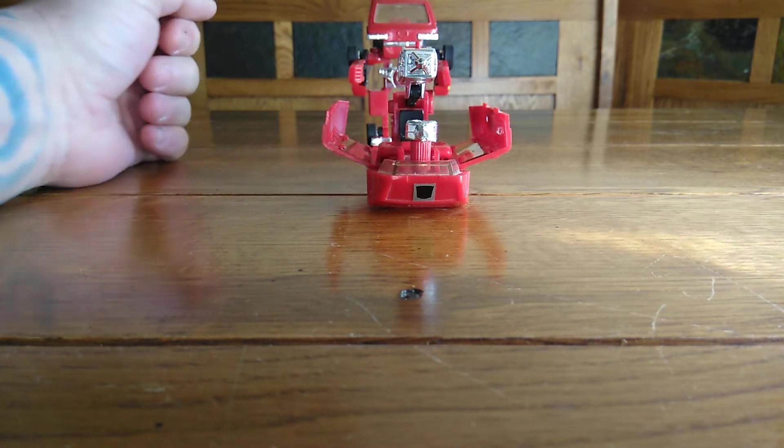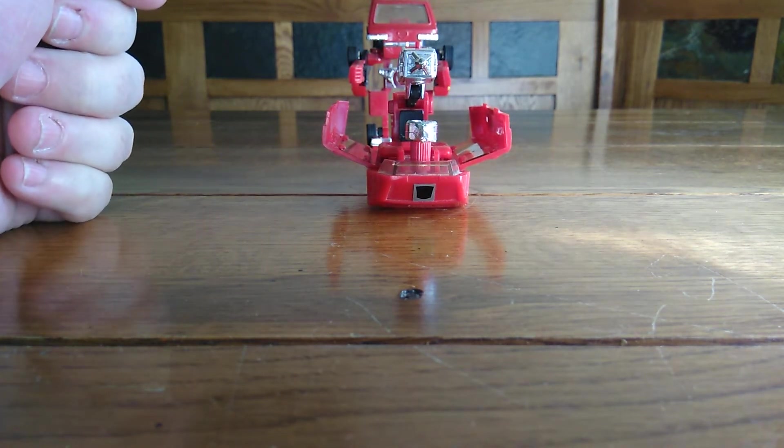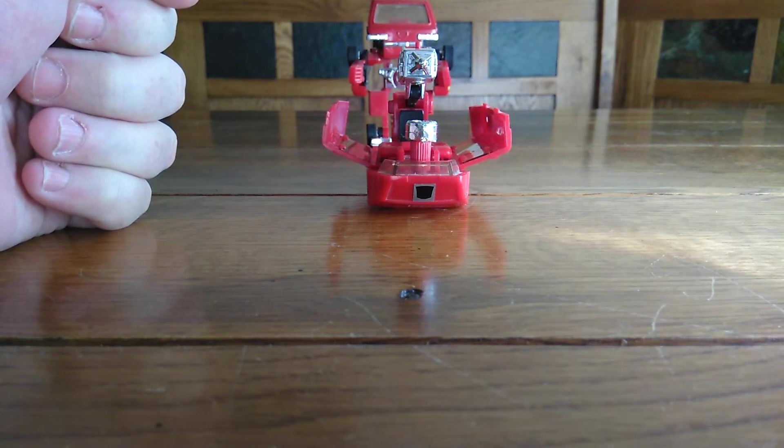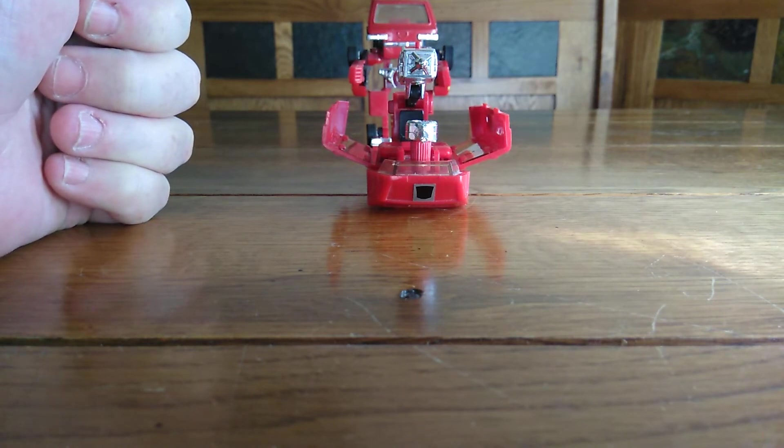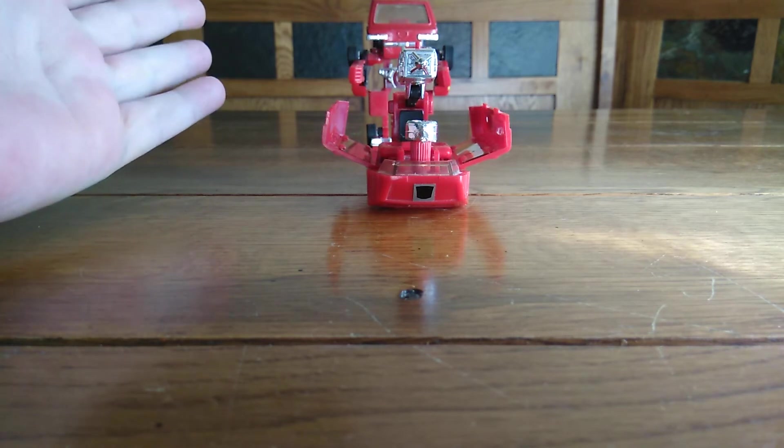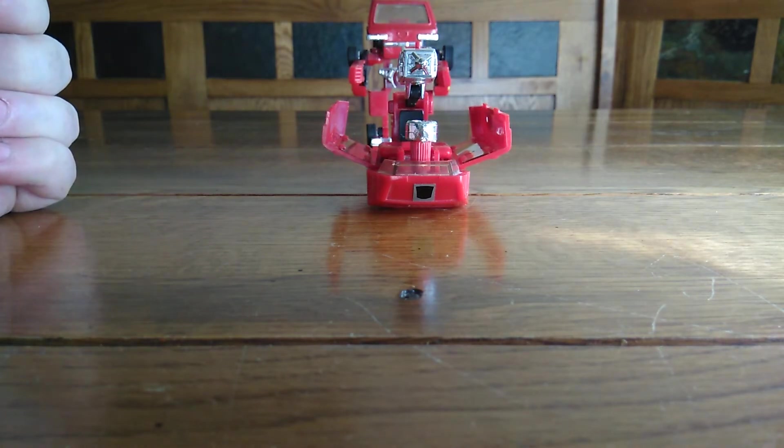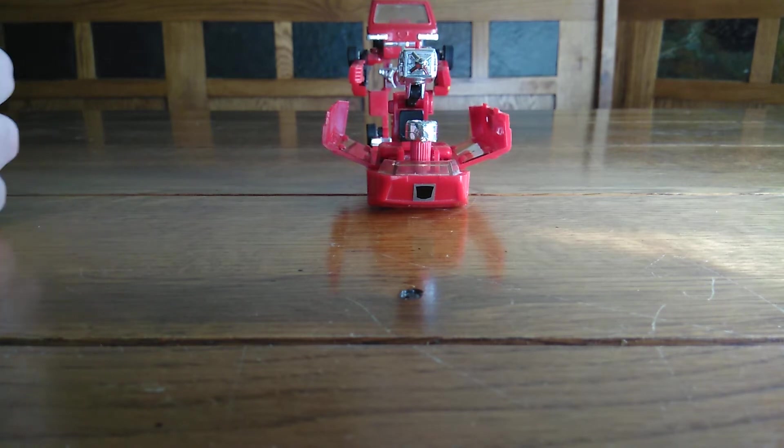So, I don't think they spent a lot of time designing this one. Now, the masterpiece Ironhide does have a head and has done really well. But the G1 is, as you can see, he's not that lifelike. Or he doesn't look like the cartoon at all. So, he does have a cool van mode, though. So, that's what we're going to get into.